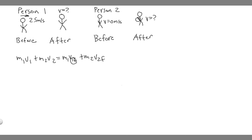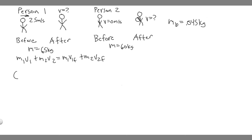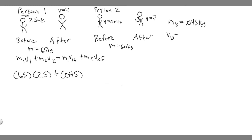We're solving for v1_final, the velocity of person one at the end. So: m1 is 65 kilograms times v1 of 2.5 meters per second, plus m2 — the mass of the snowball, 0.045 — times v2. The speed of the snowball after it's thrown is 30 meters per second. So plugging in: 65 × 2.5 + 0.045 × 30 = 65 × v1_final + 0.045 × v2_final.